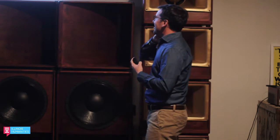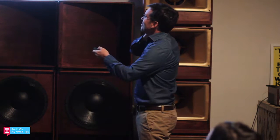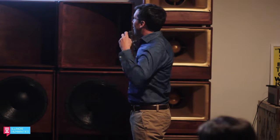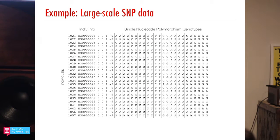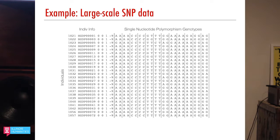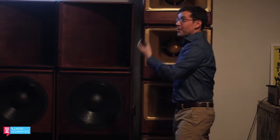At the end of the day, you get a big table where each row is an individual. It might have individual identifier information, and then for each location in the genome — each SNP, each variable position — a readout of what two alleles they have. So this individual might show CC, CC, TC, and so on. This is a view of our genetic diversity.